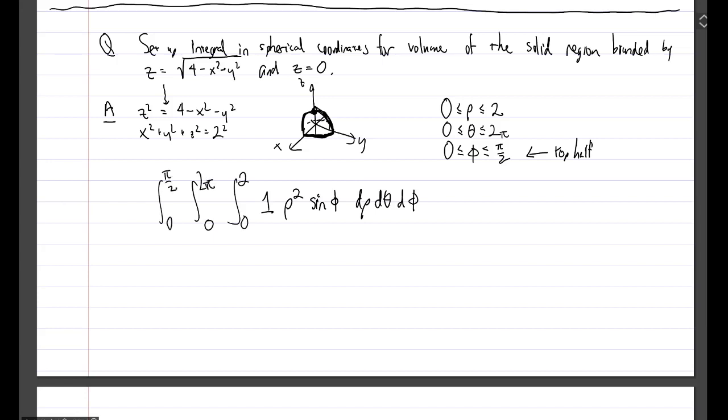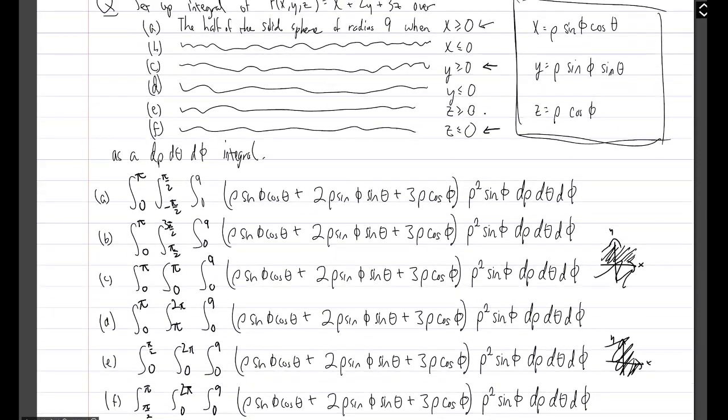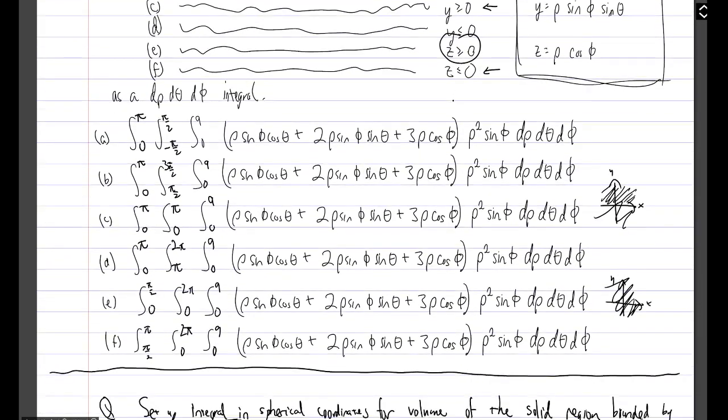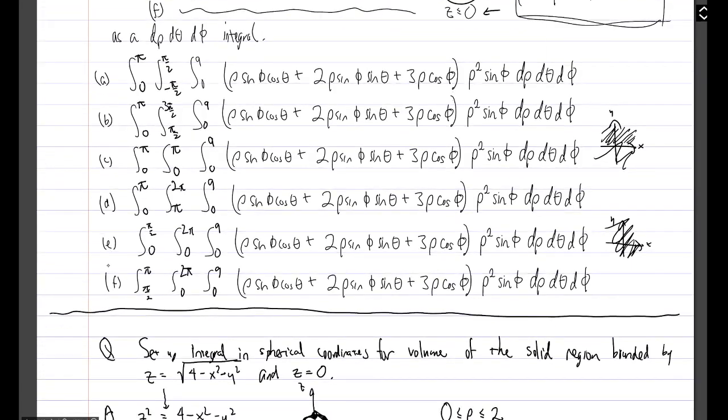And finally phi is going to go from 0 to pi over 2. What I just want to do is compare this to, we're done with the problem, but I would just like to compare this to our answer from part e earlier. So in part e we were talking about solid sphere of radius 9. Z greater than or equal to 0.